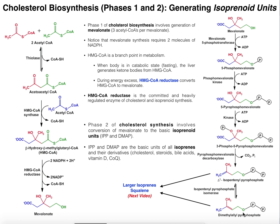We're generating isoprenes, and we'll then see how these are used to make squalene in the next video, and then cholesterol in the video after that. Generally speaking, cholesterol biosynthesis is divided into four phases. We're going to do phases one and two here. Phase one is to synthesize a molecule called mevalonate, and phase two is the conversion of mevalonate into these isoprenes.